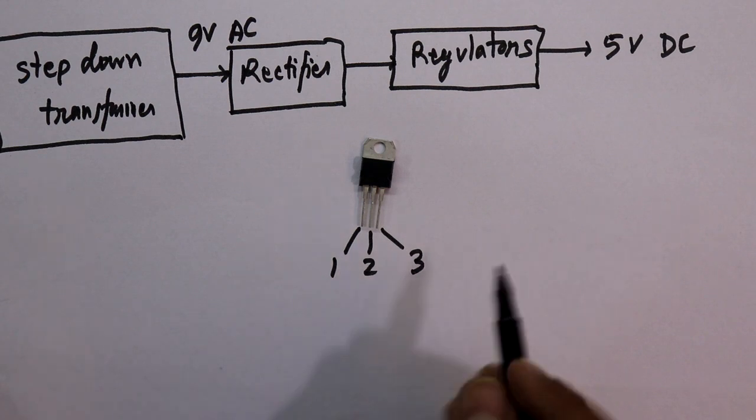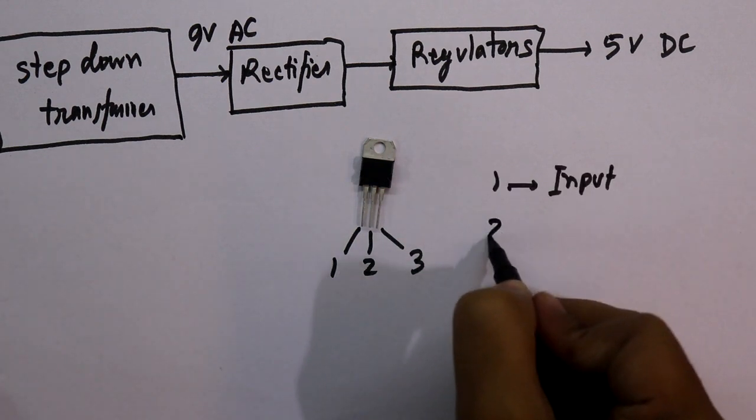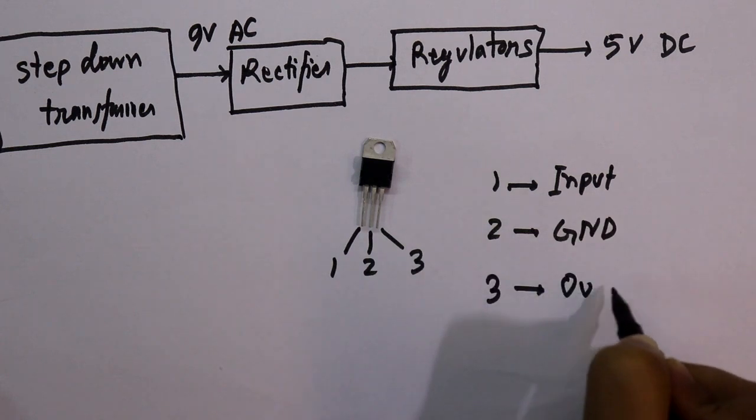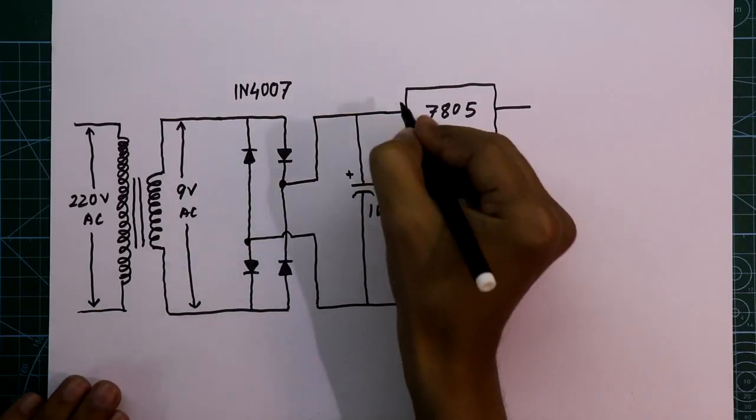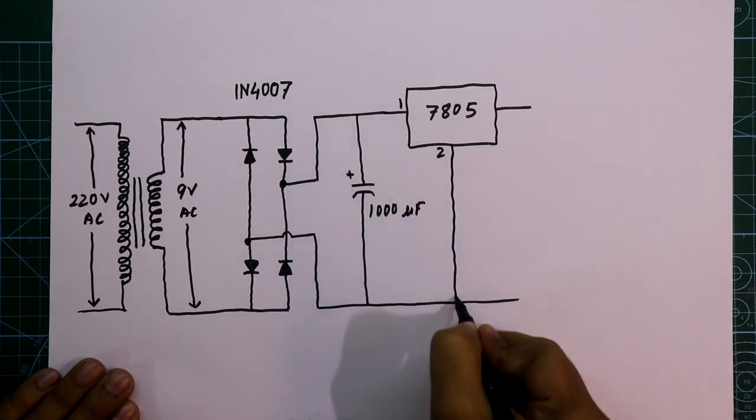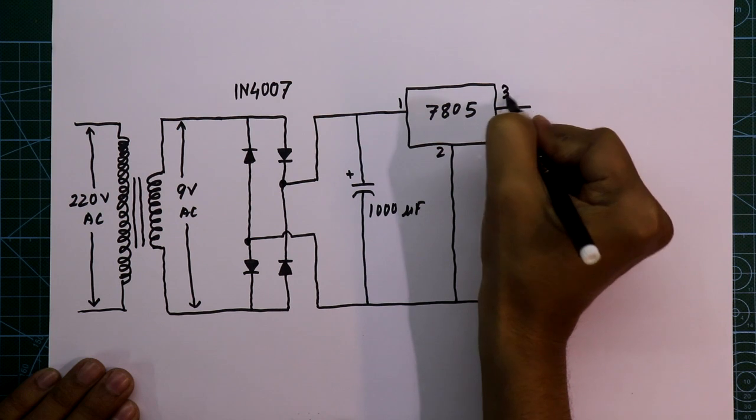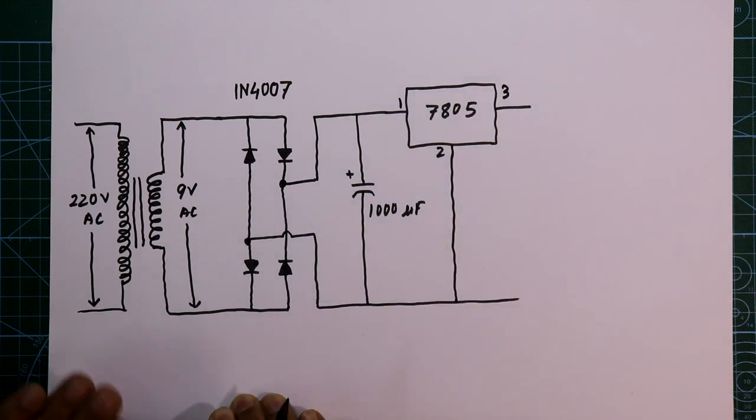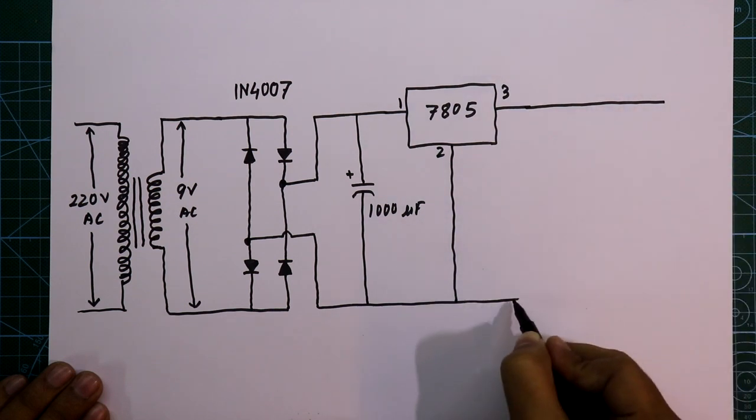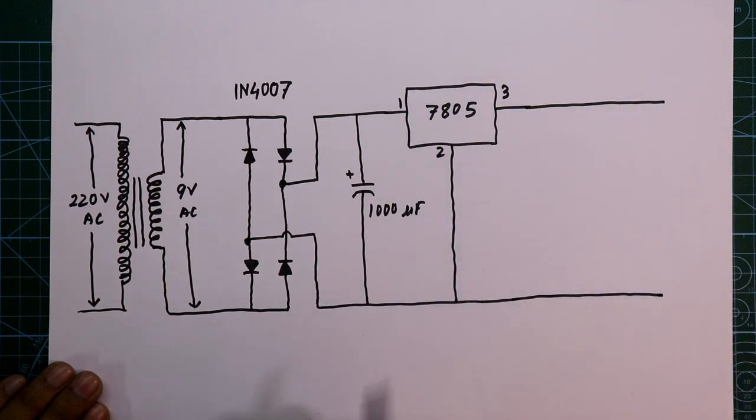The first pin is the input, the middle pin is ground, and the third pin is output. This is pin number one and the middle pin, that is pin number two, should be connected to ground. Pin number three is the output and from here we will get the regulated 5 volt DC.